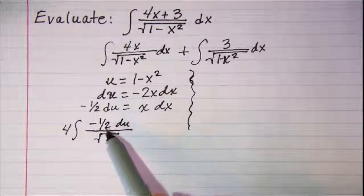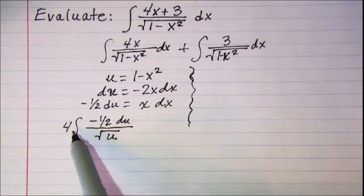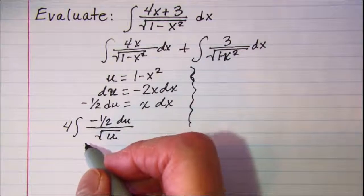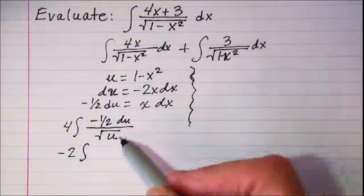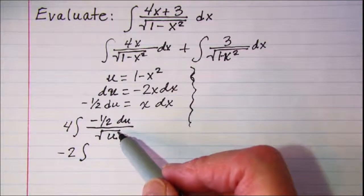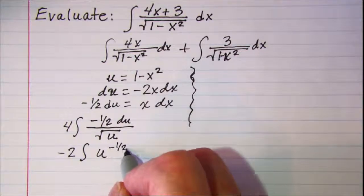So now this negative 1 half can be brought out in front, that'll give me a negative 2 times the integral of, and I'm going to write this as u to the negative 1 half du.